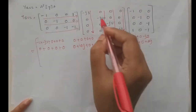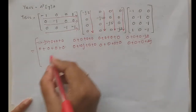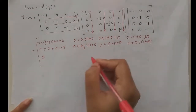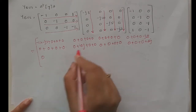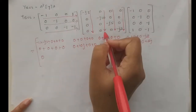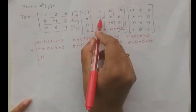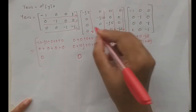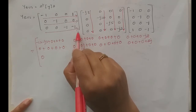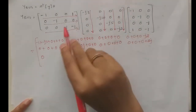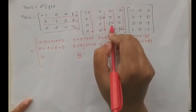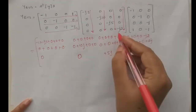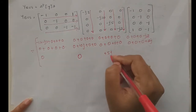Third row with first column: zero times j3 is zero, zero times zero is zero, minus one times zero is zero, minus one times zero is zero — result is zero. Third row with second column: zero times zero is zero, zero times minus j10 is zero, minus one times zero is zero, minus one times zero is zero — result is zero. Third row with third column gives: minus one times zero is zero, minus one times zero is zero — overall plus j5 only. Last row and last column: all terms multiply to zero except the last giving plus j2.